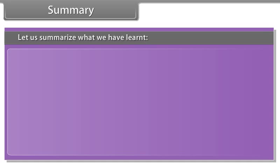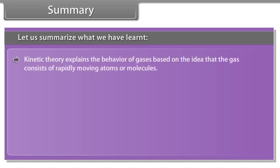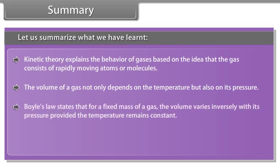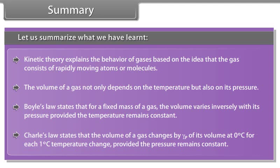Let us summarize what we have learned. Kinetic theory explains the behavior of gases based on the idea that the gas consists of rapidly moving atoms and molecules. The volume of a gas not only depends on the temperature but also on its pressure. Boyle's law states that for a fixed mass of a gas, the volume varies inversely with its pressure provided the temperature remains constant. Charles law states that the volume of a gas changes by gamma P of its volume at 0 degree centigrade for each 1 degree centigrade temperature change provided the pressure remains constant.